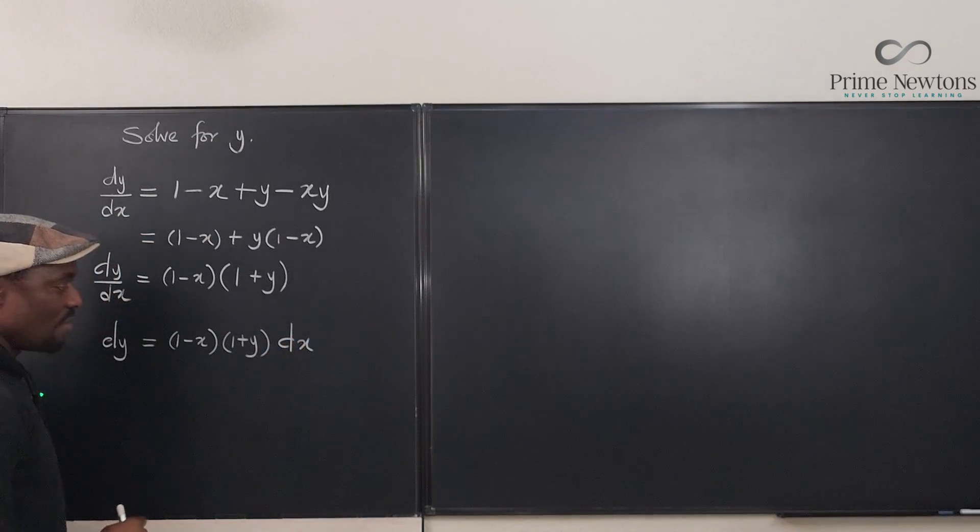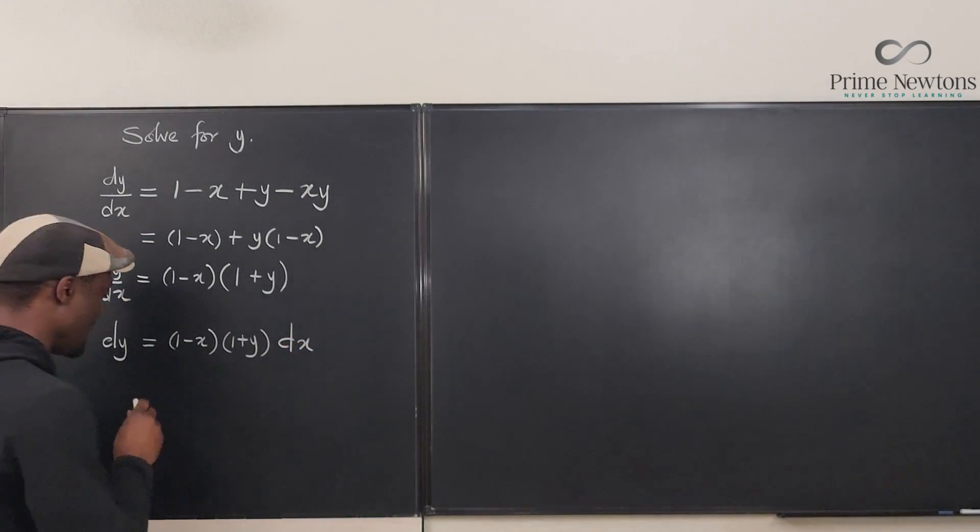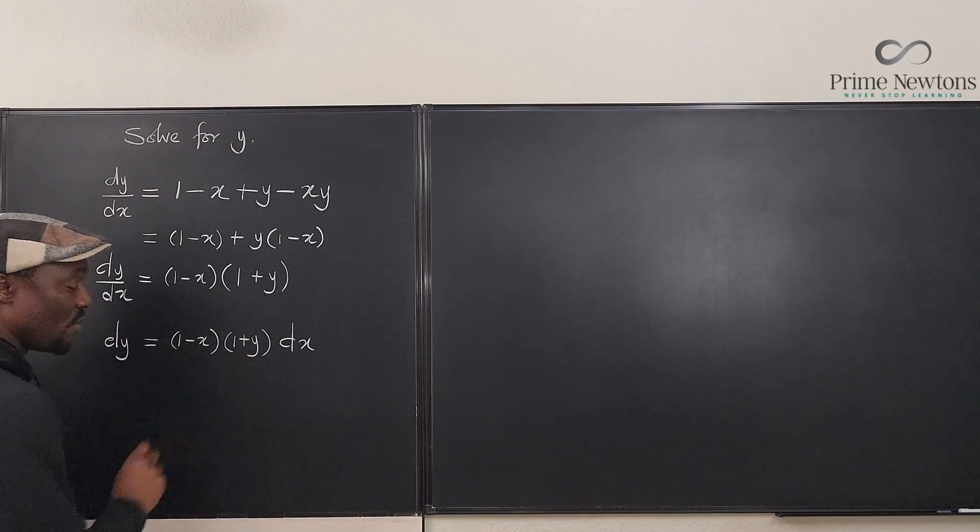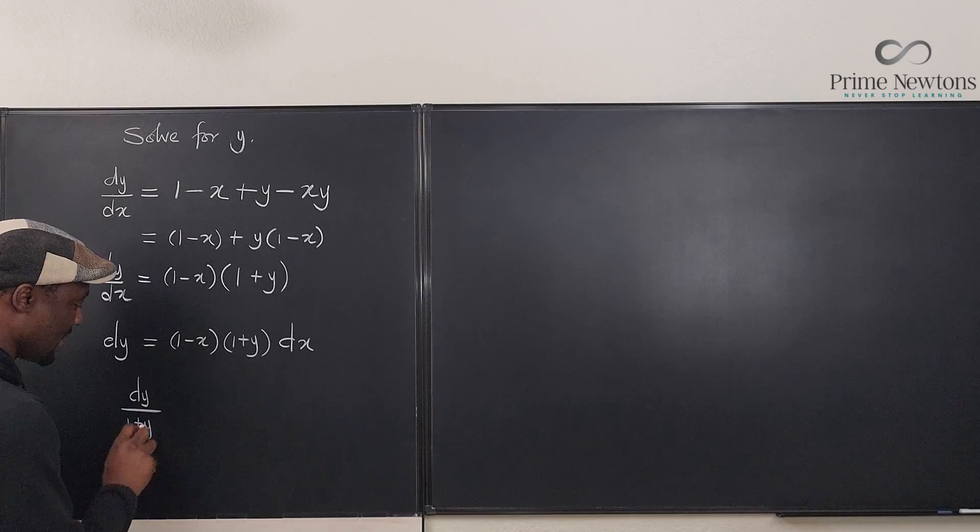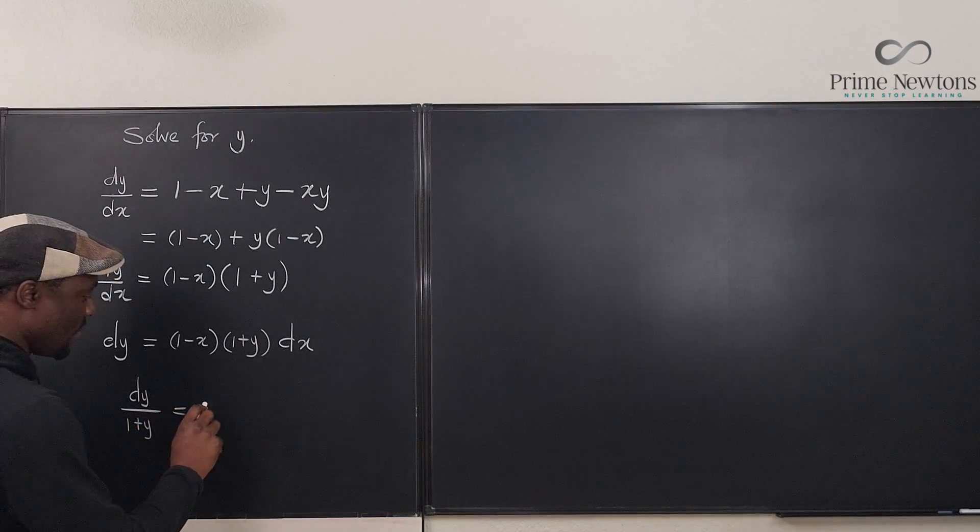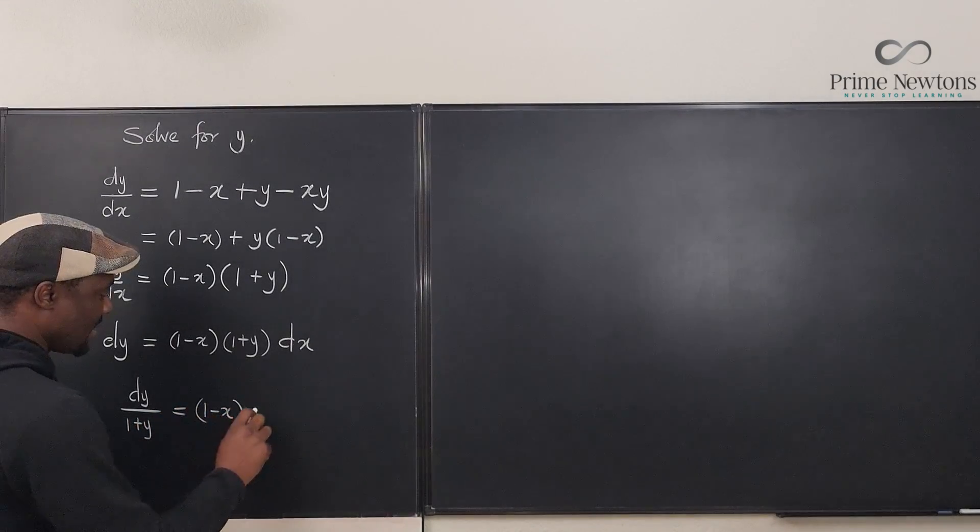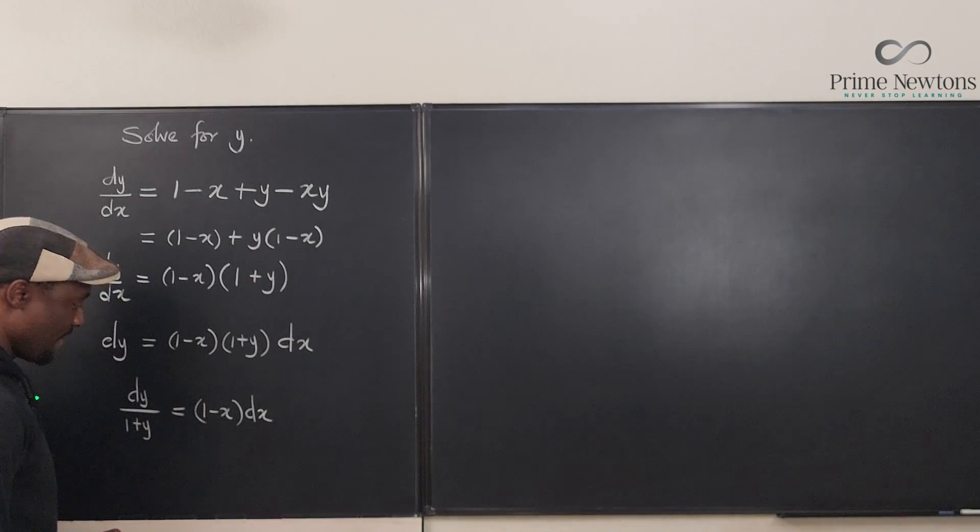But we want the y to be on this side, so we're going to divide both sides by (1 plus y), so that we have dy divided by (1 plus y) equals (1 minus x) dx. And this can give us a separable differential equation such that if we integrate both sides...